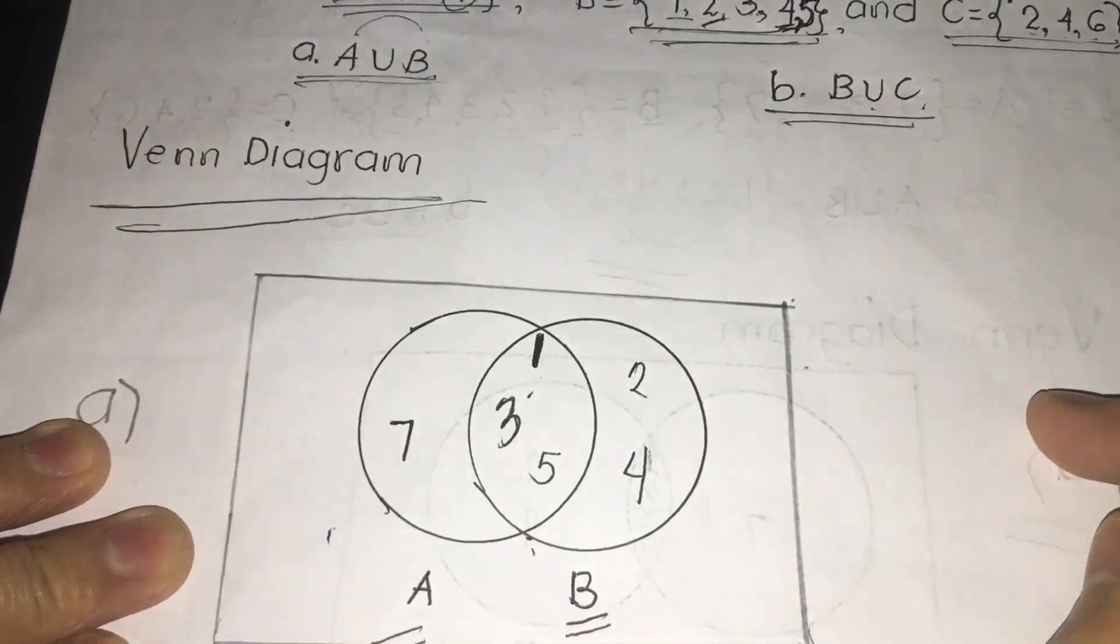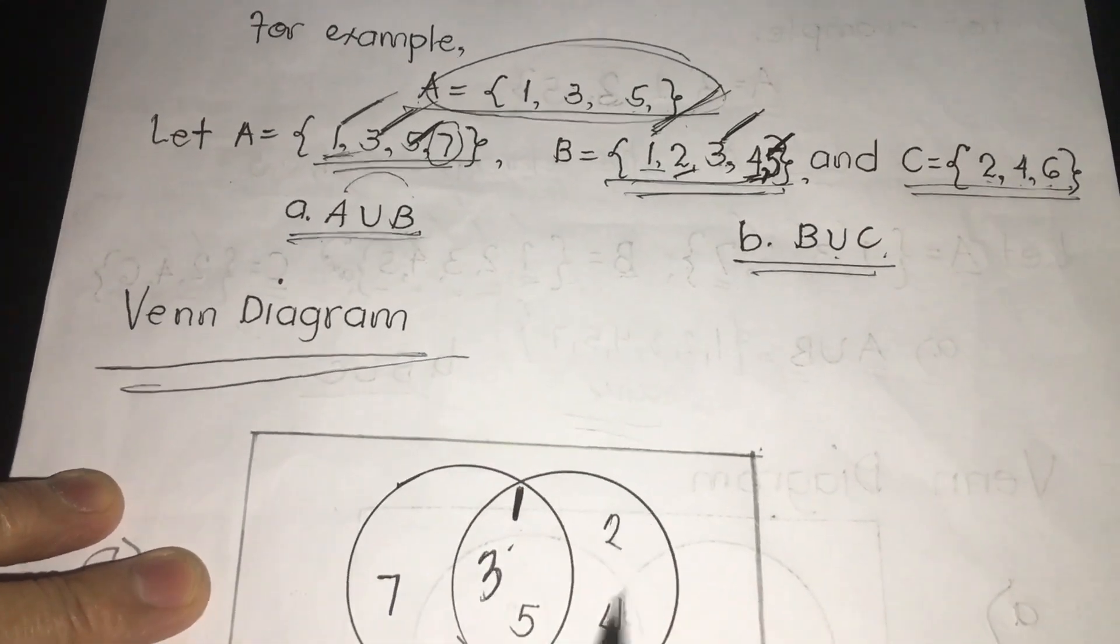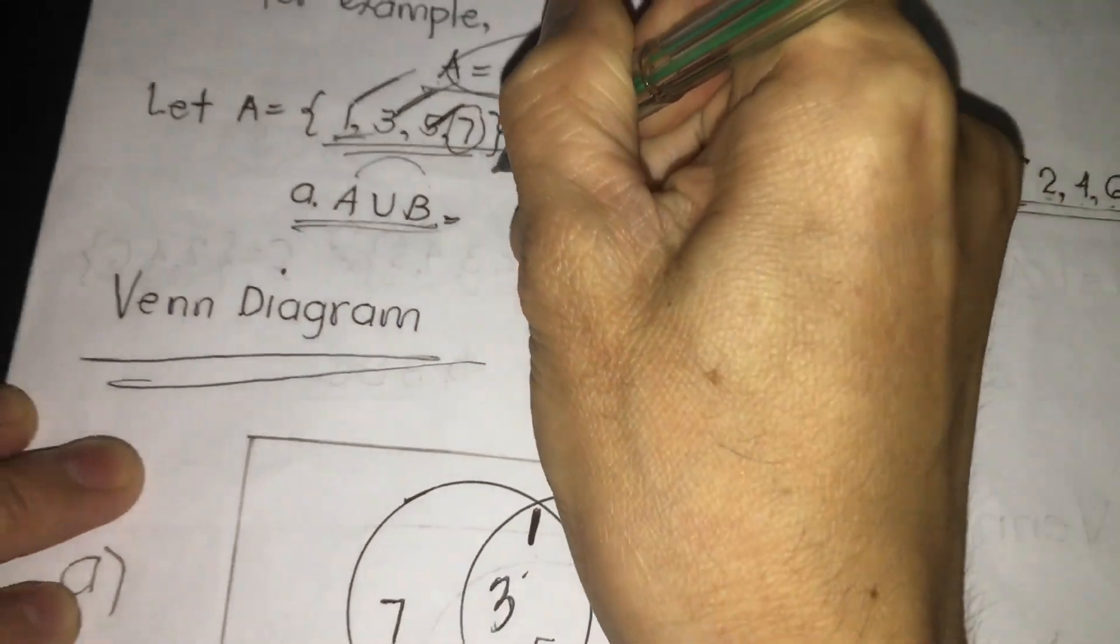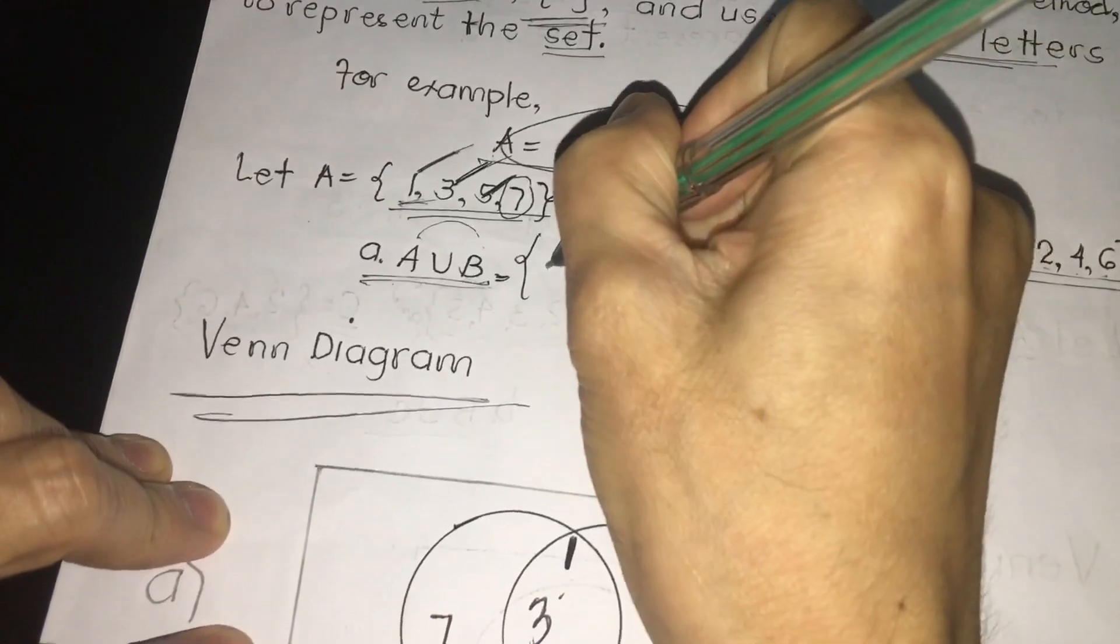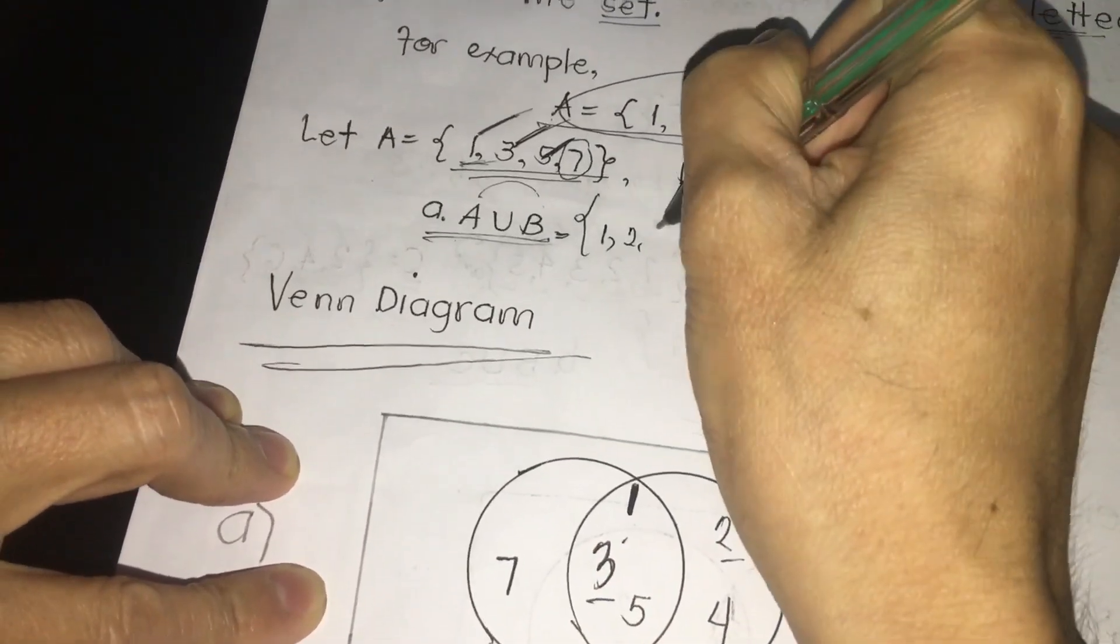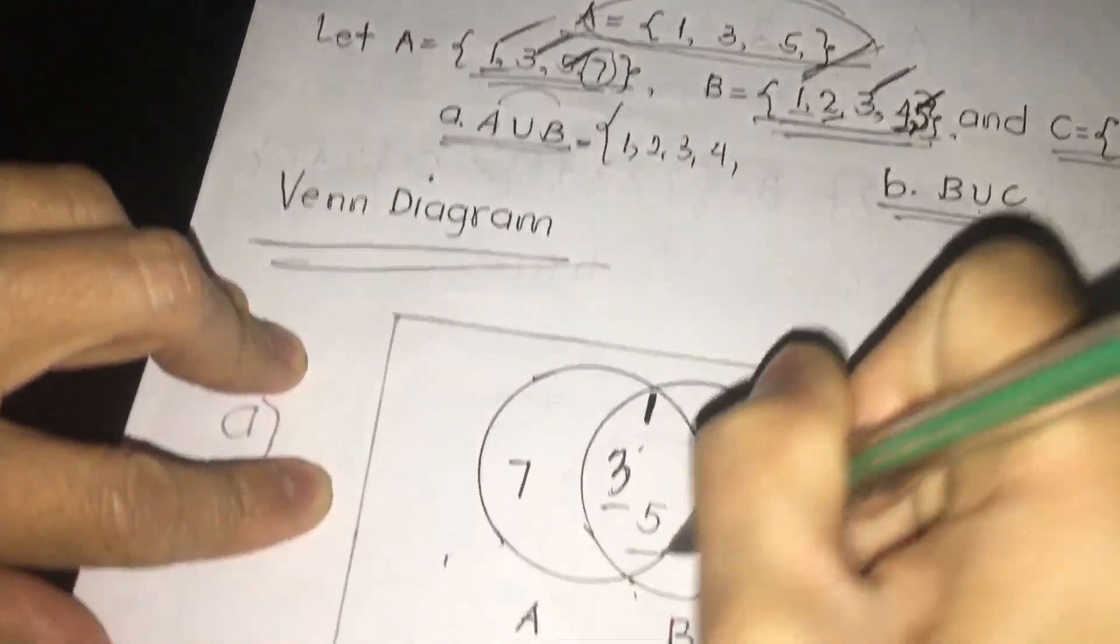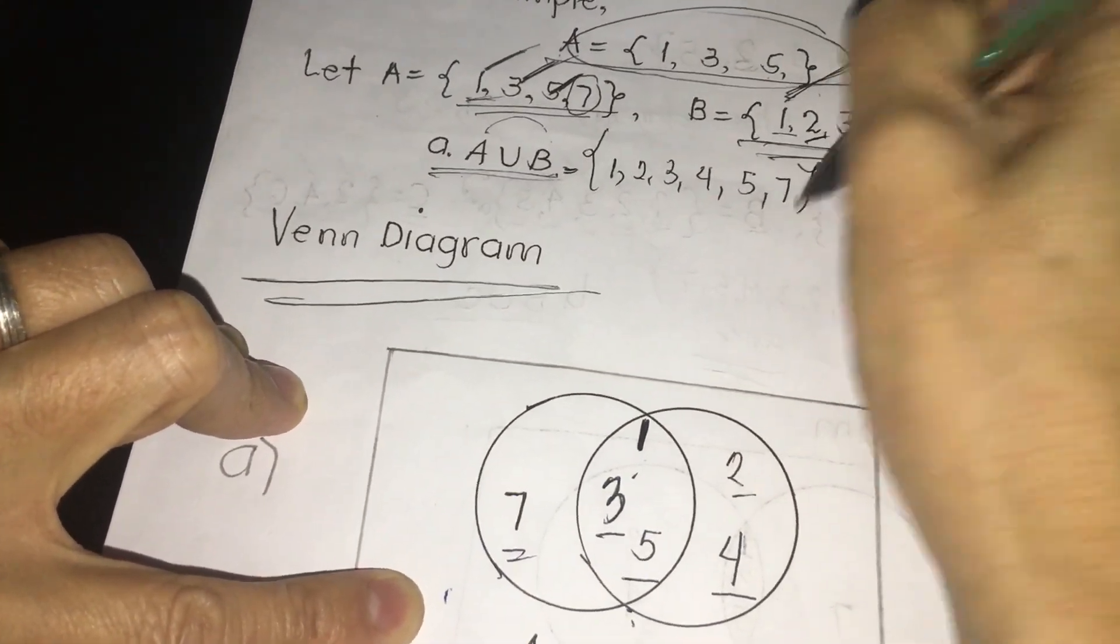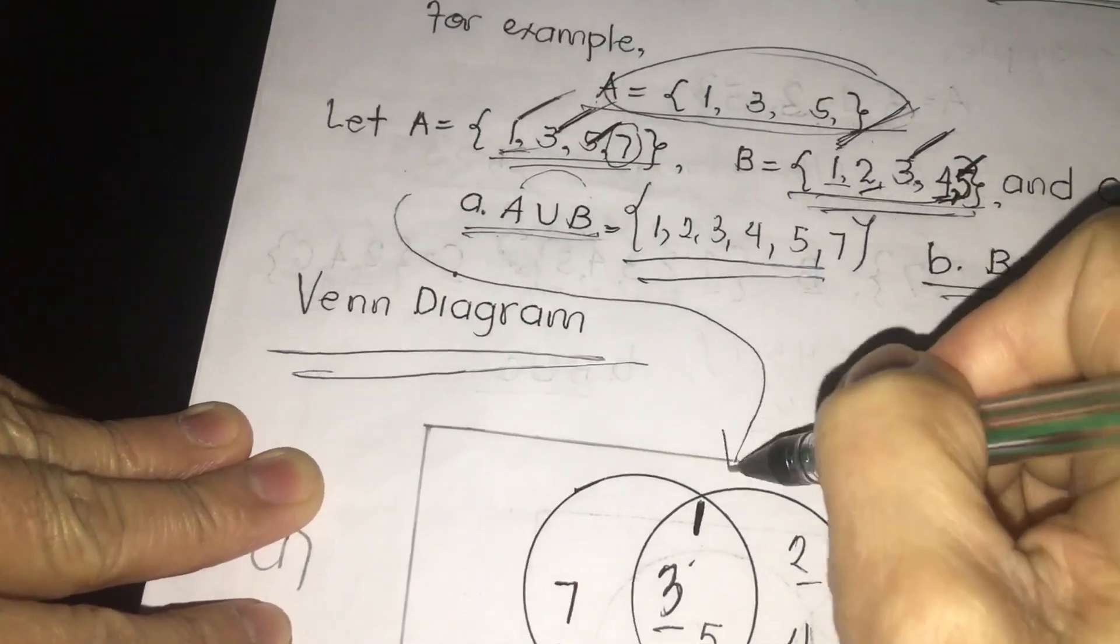Now we are going to put first here letter A, A is the union of B. We're going to jot down all numbers here in the circle, sequence of numbers. Of course, we're going to write. Don't forget to use our braces. We're going to write 1, because 1 is the first number. Next to 1 is 2. Next to 2 is 3. Sequence, my dear viewers. 4, and then 5, and 7 is the last. This will be our answer and this is our Venn diagram.